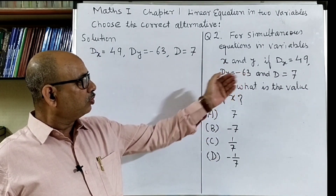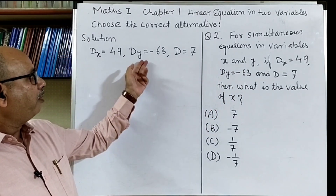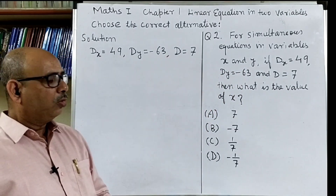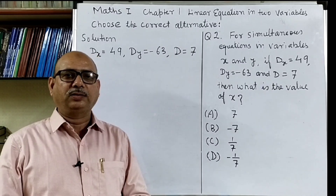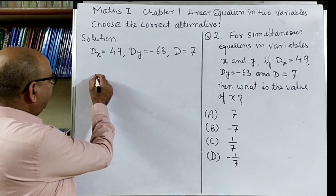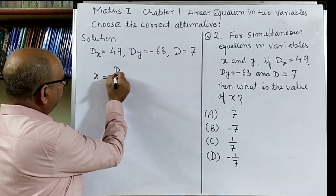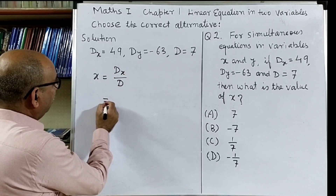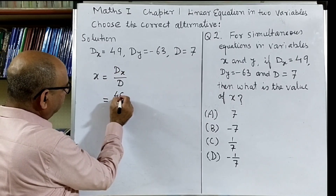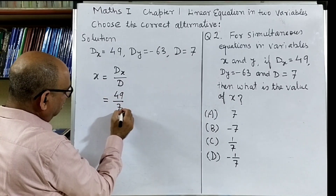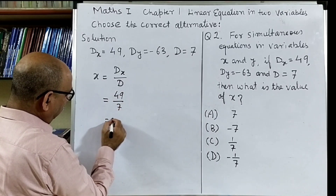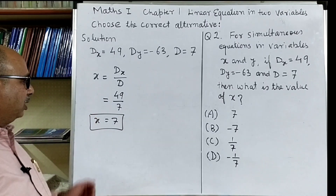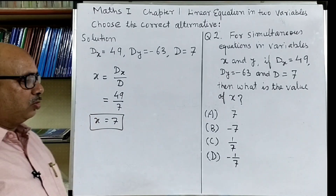Question number two: for simultaneous equations in variables x and y, if Dx is equal to 49, Dy is equal to minus 63, and D is equal to 7, then what is the value of x? We know that x is equal to Dx divided by D. Dx is 49 and D is 7, which gives x equal to 7. The correct option is A.